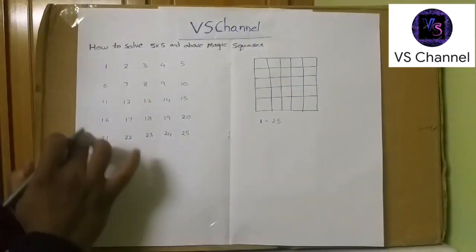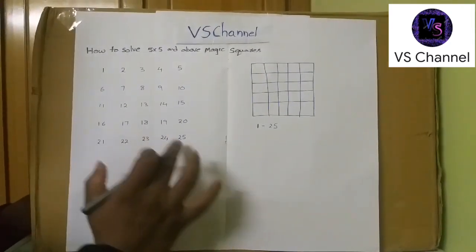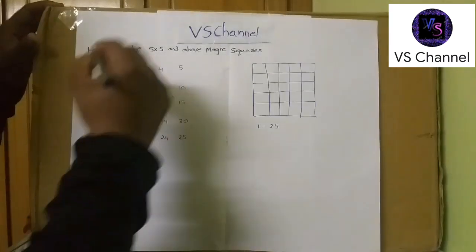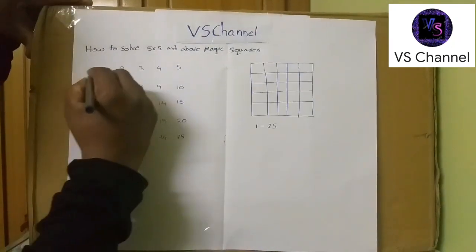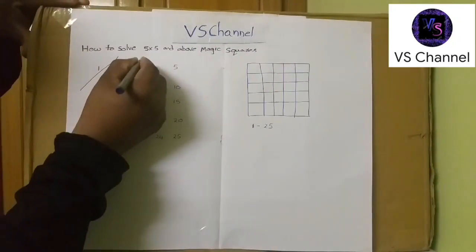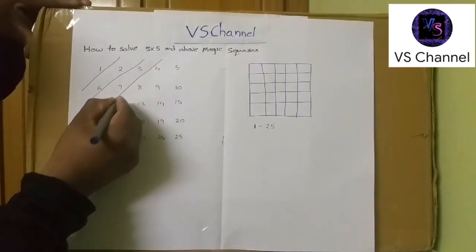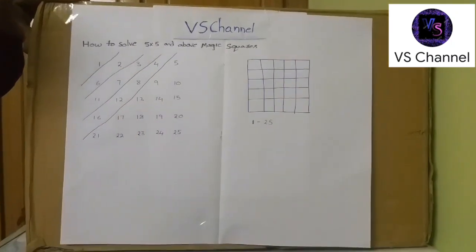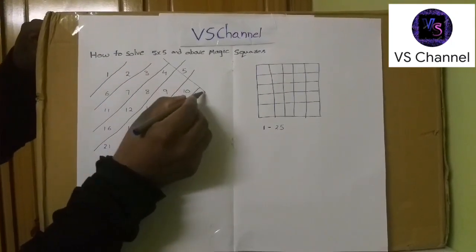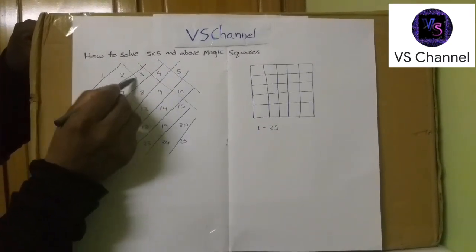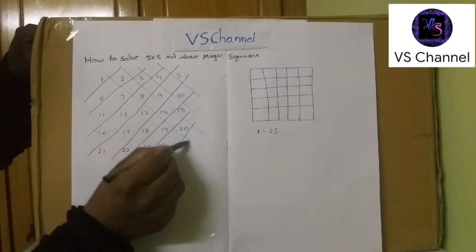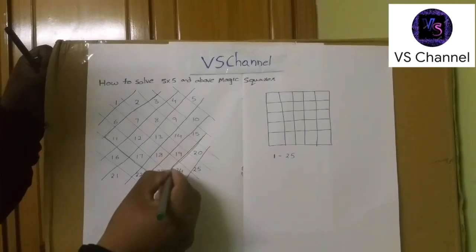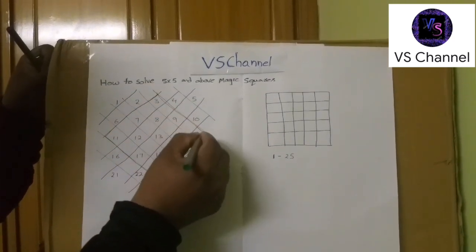So first we need to note down 1 to 25 like this: 1, 2, 3, 5, 6 to 10, 11 to 15, 16 to 20, and 21 to 25. According to the previous logic we need to draw diagonal lines like this. Now we can draw diagonal lines from this side and we can choose this area as a 5 into 5 square.